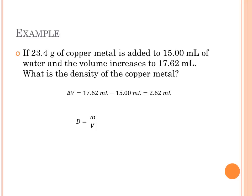So we use our density equation. We're going to plug in the 23.4 grams and the 2.62 milliliters. Divide that out. We have a density of copper of being 8.93 grams per milliliter, which you find is the literature value.